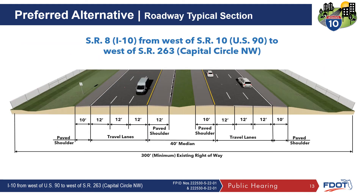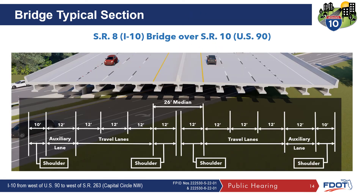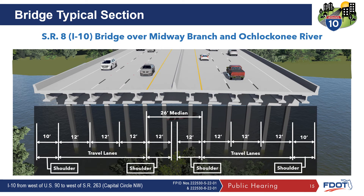The preferred alternative for I-10 consists of a 40-foot median with 3 12-foot lanes in each direction. Eastbound traffic will have a 10-foot outside paved shoulder and a 10-foot inside paved shoulder. Westbound traffic will have a 10-foot outside paved shoulder and a 12-foot inside paved shoulder with a high-tension cable median barrier. The proposed I-10 overpass bridge over U.S. 90 will consist of 4 12-foot lanes in each direction, 10-foot outside shoulders with traffic railings, and 12-foot inside shoulders with a median barrier wall. The proposed bridges over Midway Branch and O'Clockney River will consist of 3 12-foot lanes in each direction, 10-foot outside shoulders with traffic railings, and 12-foot inside shoulders with a median barrier wall.